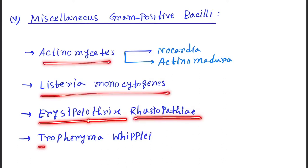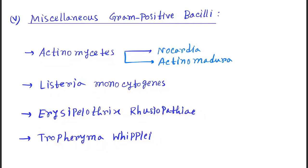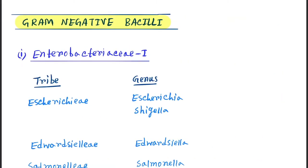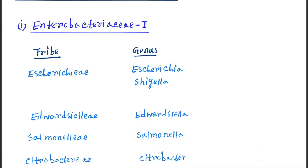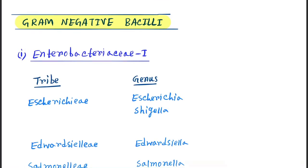Actinomyces includes Streptomyces, Nocardia, and Actinomadura. Next is gram negative bacilli. So here Enterobacterium 1 and Enterobacterium 2.